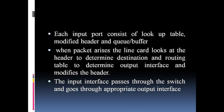Now when the packet arises, the line card looks at the header to determine destination and the routing table to determine the output interface, and modifies the header which then goes to the buffer.